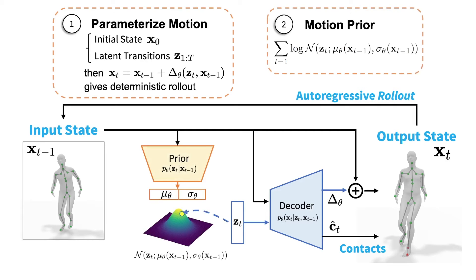Second, by evaluating the prior network during rollout, we know the distribution of latent variables at each step, which is used to evaluate the likelihood of the transition sequence.